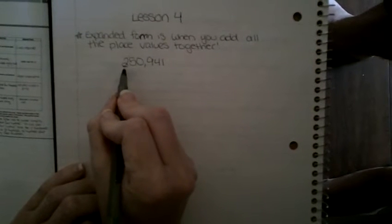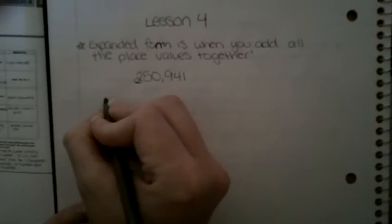So here's my example. I have 250,941, and I'm going to show you what this looks like in expanded form. So we're going to start all the way to the left. This two is in the hundred thousands range. So I know that this is going to equal 200,000.